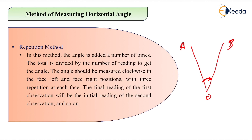In this method, the same angle AOB is added a number of times. The total is then divided by the number of readings to get the angle. For example, if we have added it three times, then total angle divided by three. The angle should be measured clockwise in both the face left and face right positions.